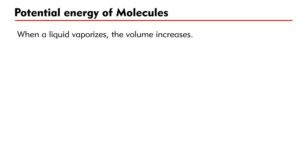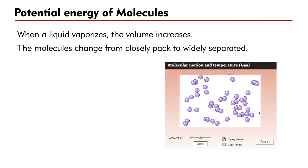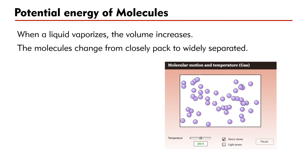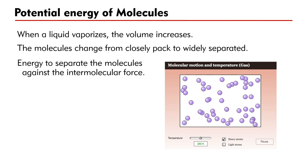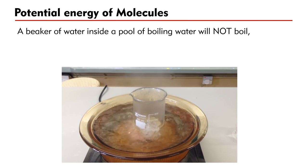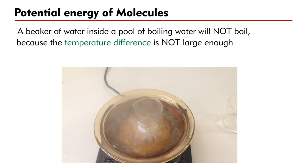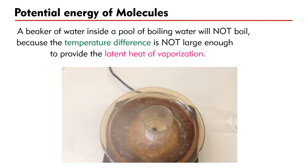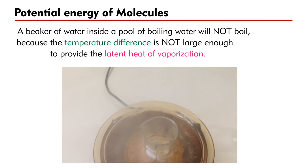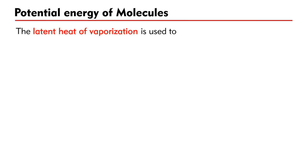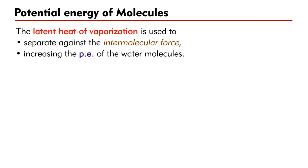When a liquid vaporizes, the volume increases. During the process, the molecules change from closely packed to widely separated. Energy is needed to separate the molecules against the intermolecular force. This explains why latent heat of vaporization is needed to vaporize a liquid. For example, a beaker of water inside a pool of boiling water will not boil, because the boiling water and the water inside the beaker do not have a temperature difference large enough to provide the latent heat of vaporization. The latent heat of vaporization is used to separate the water molecules against the intermolecular force, increasing the potential energy of the water molecules.